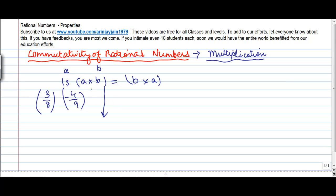So let's say a into b, or 3 upon 8 into minus 4 upon 9. 3 goes into 9 three times, 4 goes into 8 two times, so we have 1 into 1 is equal to 1, 2 into 3 is equal to 6. Minus into plus gives us minus, so minus 1 upon 6.